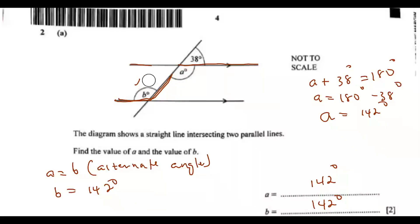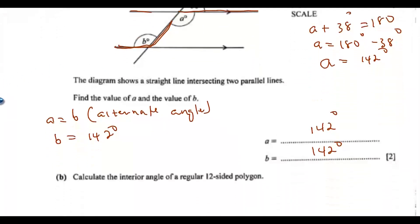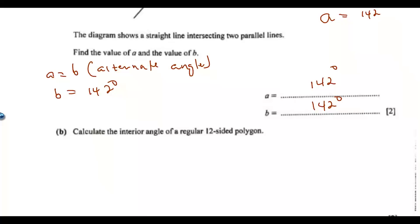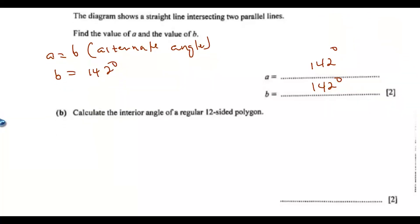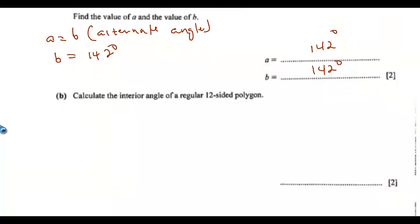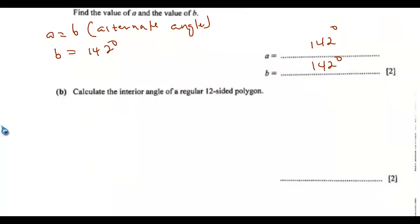So there are many ways you could get the values of a and b respectively. Now let's go to part b: calculate the interior angle of a regular 12-sided polygon.